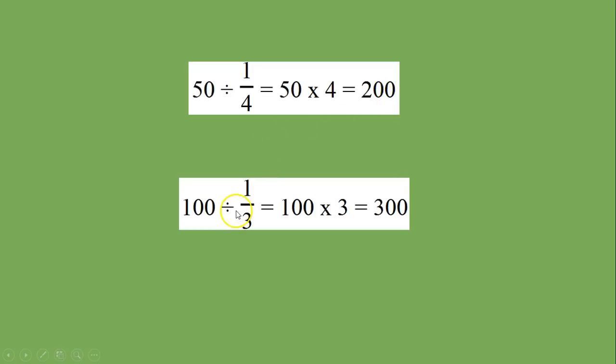Same down here working with a different unit fraction. If I had 100 divided by one third, I think of it as 100 wholes multiplied by three one thirds because it takes three of them to make a whole and I get 300 one thirds.